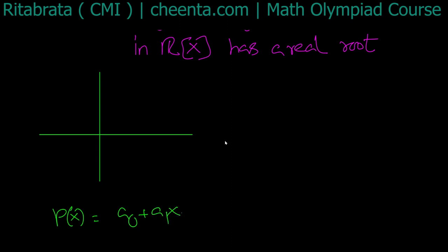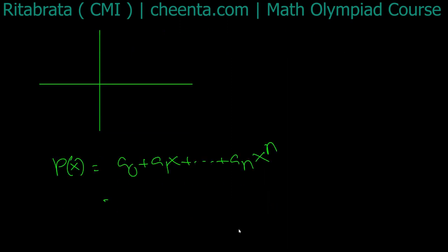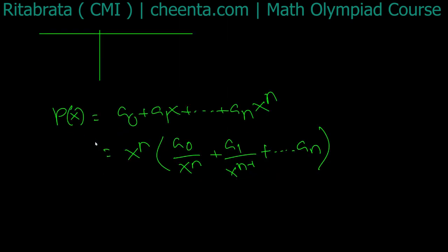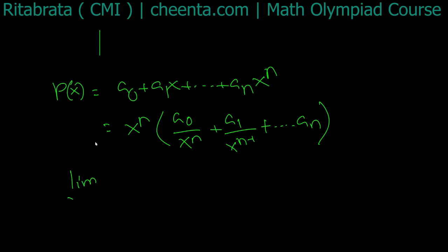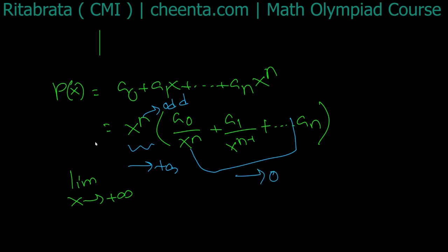We write P of x as a-naught plus a1*x plus dot dot dot plus a_n * x^n. Factoring out x^n, the remaining terms like a-naught over x^n, a1 over x^(n-1), and so on all go to 0 as x tends to plus infinity, since n is an odd number.